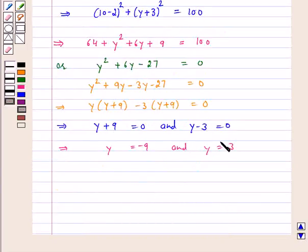So the answer for the above question is the values of y for which the distance between the point P(2, -3) and Q(10, y) is 10 units: minus 9 and 3.